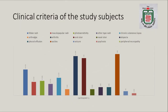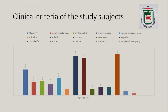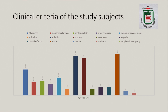Clinical criteria are the same as in other countries. The maximum patients presented with malar rash, maculopapular rash, and photosensitivity. There was also seizure, psychosis, and peripheral neuropathy as presenting features, which are the more dangerous manifestations in the case of SLE.